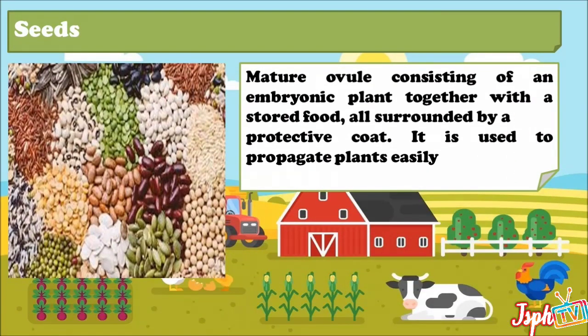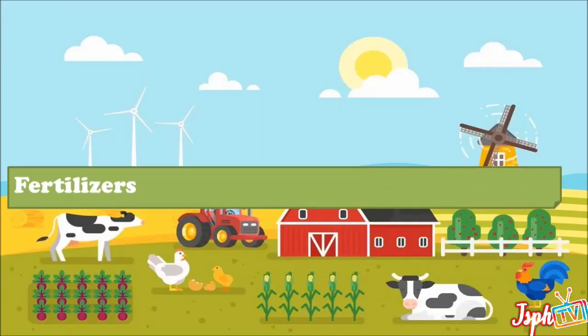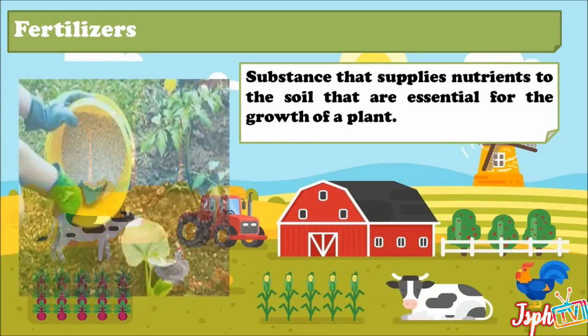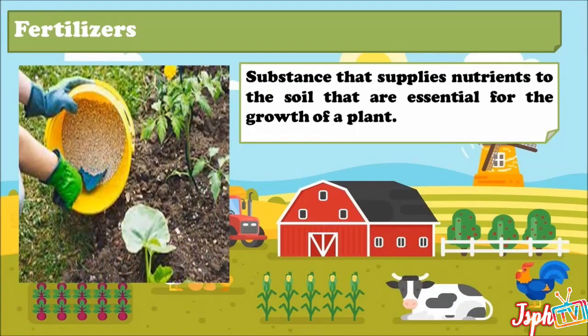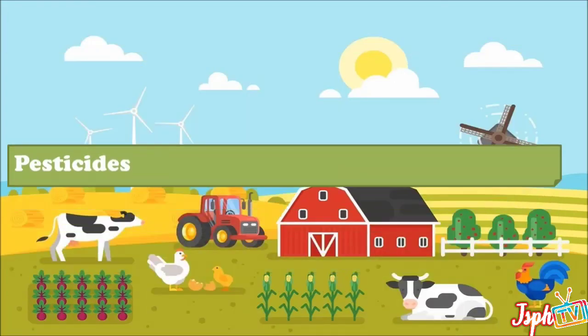Seeds: a mature seed consisting of an embryonic plant together with stored food, all surrounded by a protective coat. It is used to propagate plants easily. Next, fertilizers: a substance that supplies nutrients to the soil that are essential for the growth of the plant.